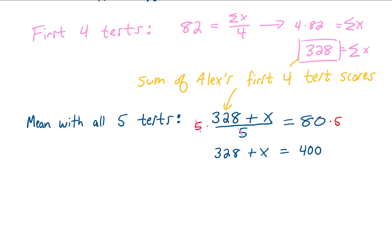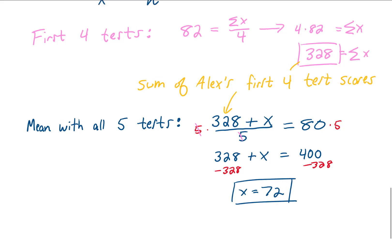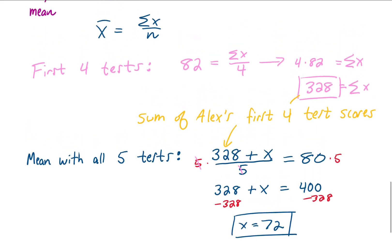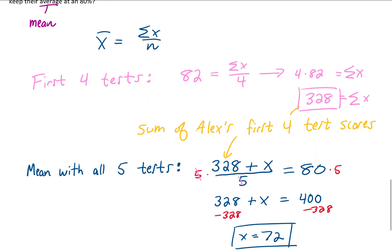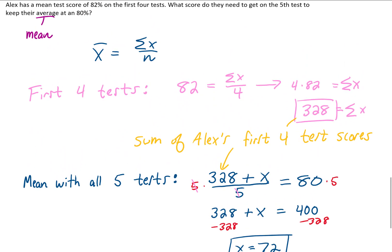Now, to finish solving for x, we subtract 328 from both sides of the equation. 400 minus 328 is 72. So we just determined that Alex needs a 72 on their final test to maintain an average of 80% for their first 5 tests.